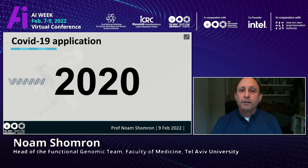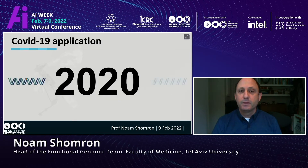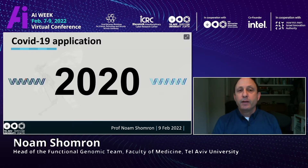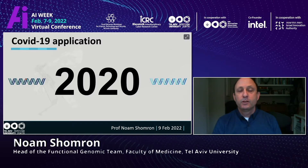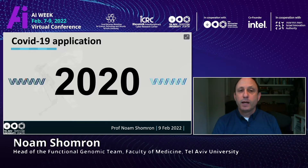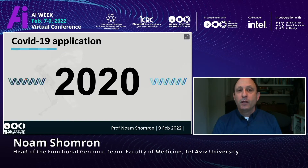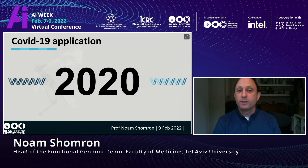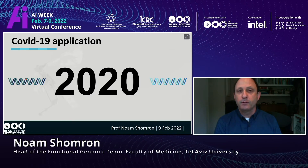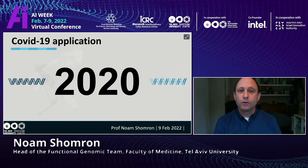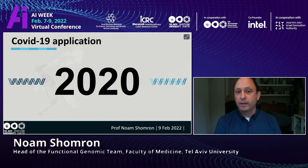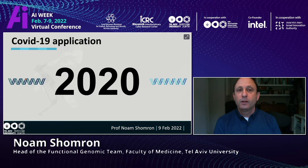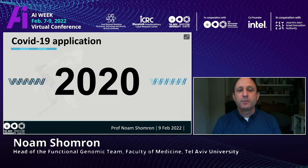We are all living in pandemic times. We have seen that a point mutation in a very small virus could cause a devastating pandemic surrounding the entire world. We also saw that, based on reading the DNA of the virus, understanding it using bioinformatics, and writing a short sequence of DNA or RNA and injecting it to billions of shoulders around the world, could bring us out of this pandemic.